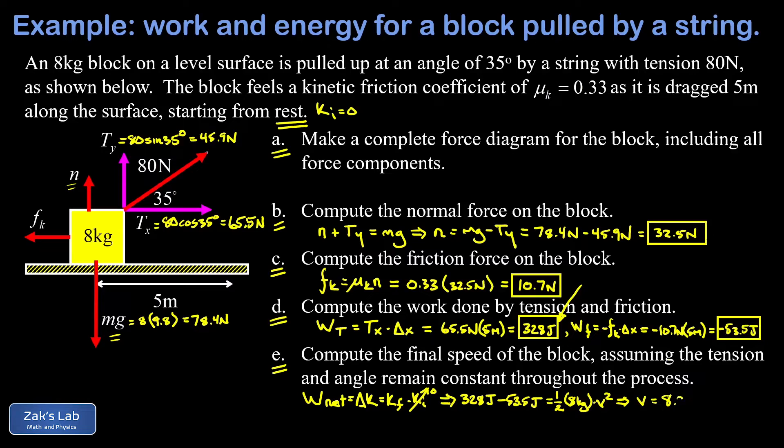One of the cool things about moving into these energy methods as we progress in a physics course is that you can always go back and check your answer with the old methods. So I encourage you to check that you get this same answer of 8.28 meters per second by just using Newton's second law directly. What I want to do is look at the net force in the x direction, that's from Tx pulling to the right and Fk pulling to the left, use Newton's second law to find the acceleration, and then solve the kinematics question of how fast you're going if you accelerate at that rate for five meters.